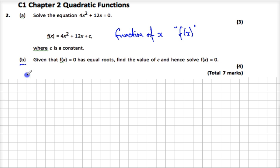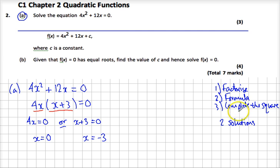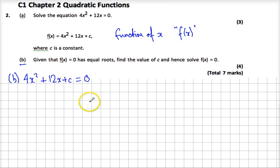Now it tells us that f(x) = 0, so we want to solve that equals 0. Well, we know there are three methods of solutions. We know we want to factorize, use the formula, or complete the square, and we know we're going to have up to two real solutions. It tells us that it has equal roots, so it tells us something very important. It tells us that the discriminant, b² - 4ac, if it's got equal roots, we know this is equal to 0.